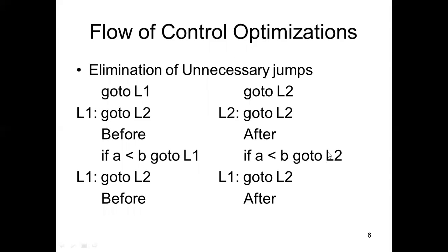Next are flow of control optimizations, where we eliminate unnecessary jumps. For example: go to L1, and at L1 go to L2. Instead of jumping to L1 and then to L2, you can directly go to L2, eliminating L1. Similarly, if A is less than B go to L1, and L1 go to L2 — you can simplify to: if A is less than B go to L2 directly, eliminating the intermediate label L1.